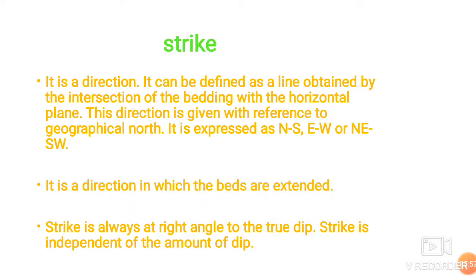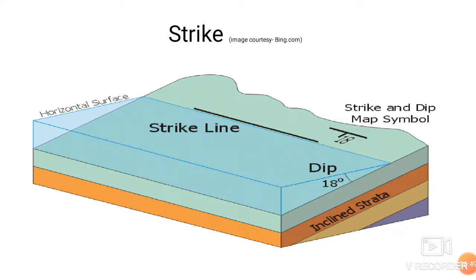When we say the strike is north-south, it means the bed was deposited in the direction north-south, extending from north to south. Sometimes it may be northeast-southwest. But always we give this direction with reference to geographical north. Another feature of strike is that it is always at right angle — perpendicular — to the true dip. Strike is independent of the amount of dip; though strike and dip are associated with each other, there is no direct connection between the amount of dip and strike.